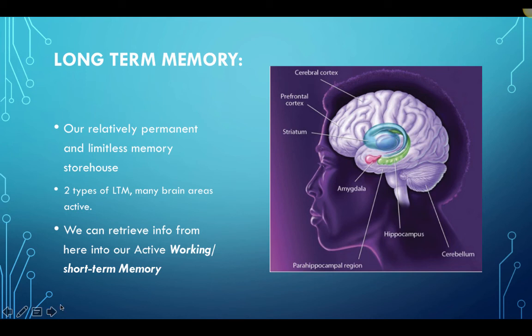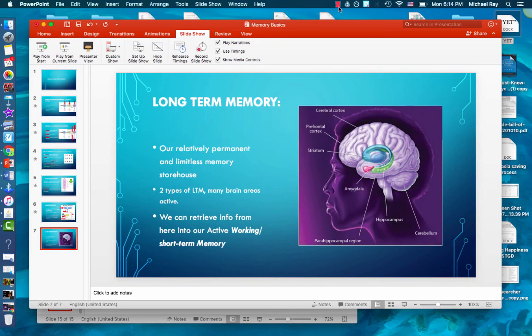Our long-term memory is a relatively permanent and relatively limitless memory storehouse. There are two different types of long-term memory, which we'll discuss later. Many different brain areas are active when retrieving and storing long-term memory, including our hippocampus and cerebellum — two terms you'll need to know well. With the right prompts and clues, we can retrieve information from long-term memory into our short-term working memory to help make decisions and judgments. Make sure you understand the terminology of duration, capacity, and sensory, short-term, and long-term memory. Thanks.